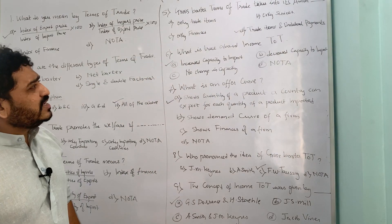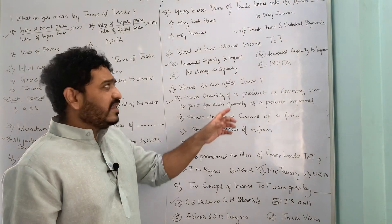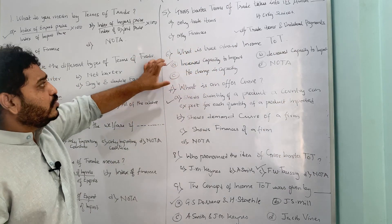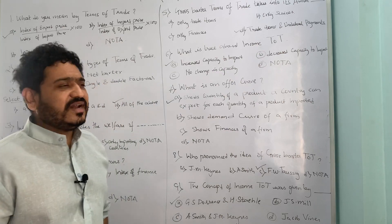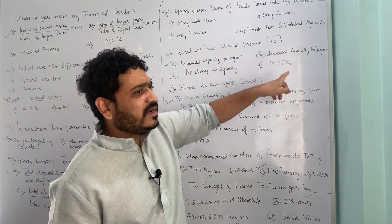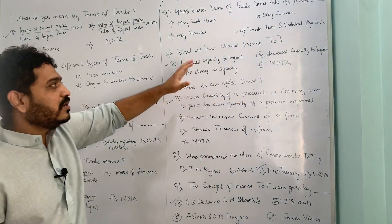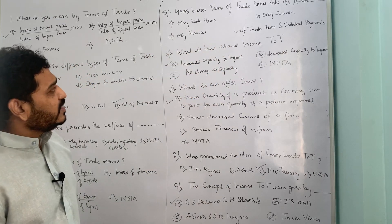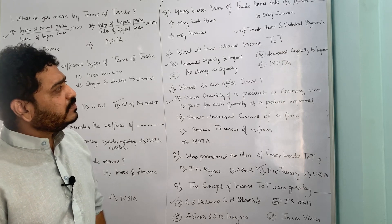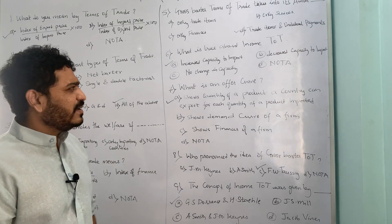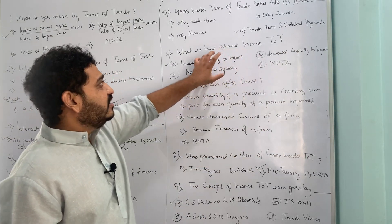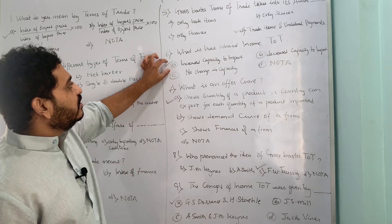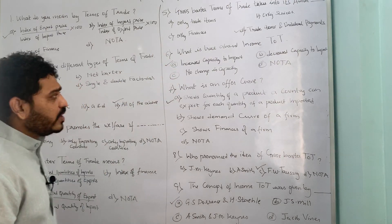The sixth question asks what is true about income terms of trade. Such questions can also be framed as what is false or what is incorrect. The options are: (A) it increases the capacity to import, (B) it decreases the capacity to import, (C) there is no change in any capacity, (D) none of the above. The correct answer is A — income terms of trade increases the capacity to import.